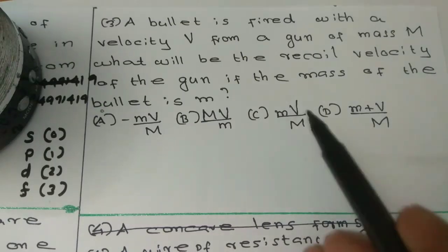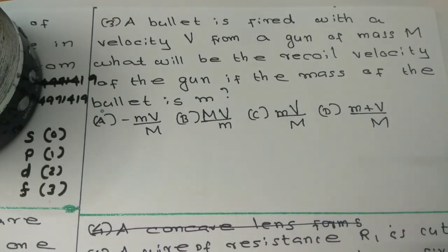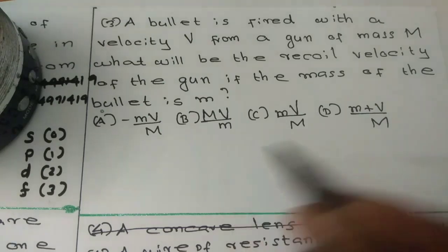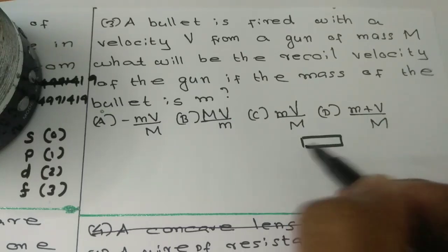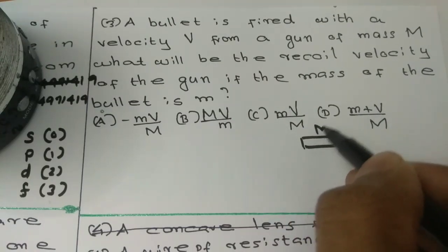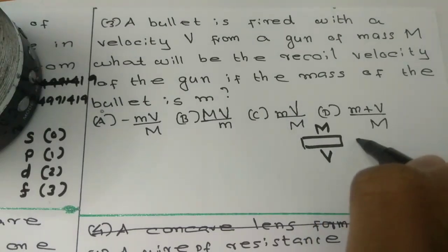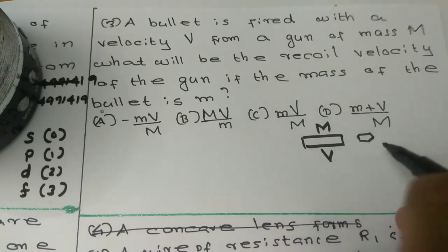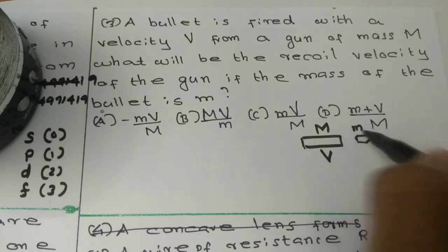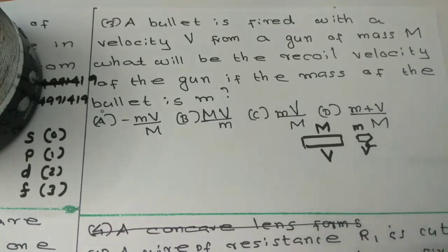Question number 3: A bullet is fired with a velocity small v from a gun of mass M. What will be the recoil velocity of the gun if the mass of the bullet is small m? The gun has mass M and velocity V, and the bullet has mass small m and velocity small v.